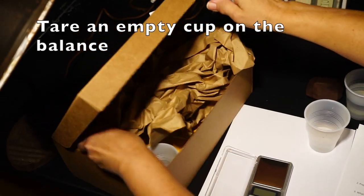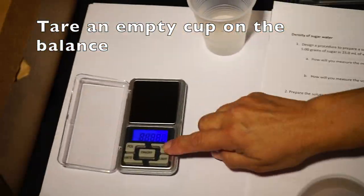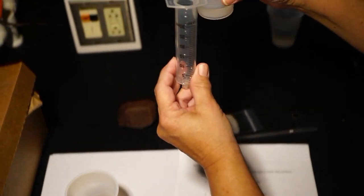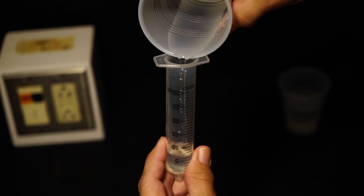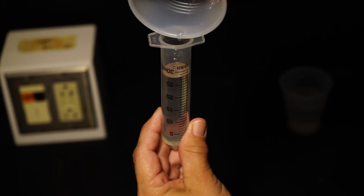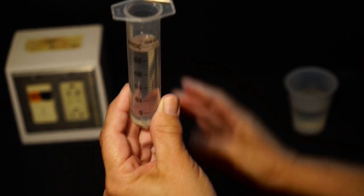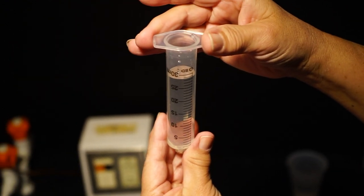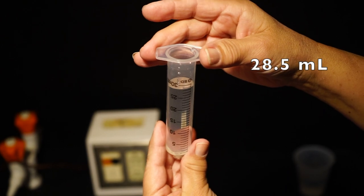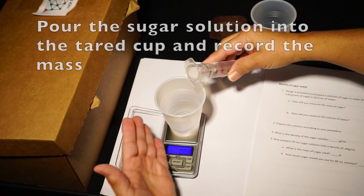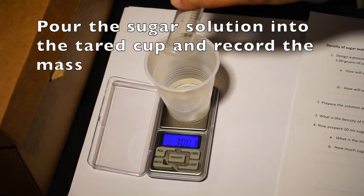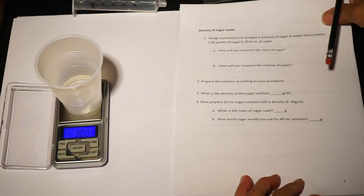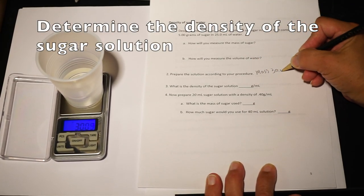Turn the balance on and add an empty cup and tare it. Take your sugar water and pour it into the syringe and measure the new volume. Is it more or less than the original 25 milliliters? Why is this? After recording this volume, pour into the tared cup on the balance and record its mass. Determine the density of this sugar solution.